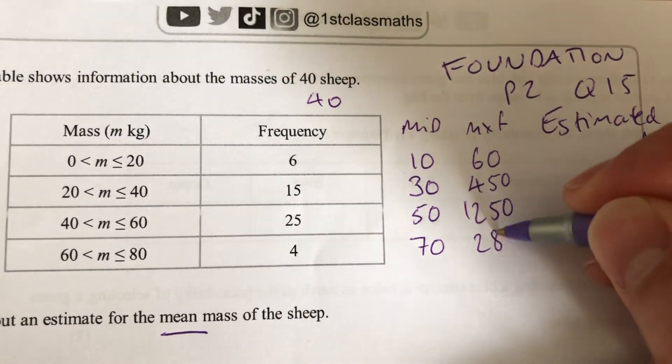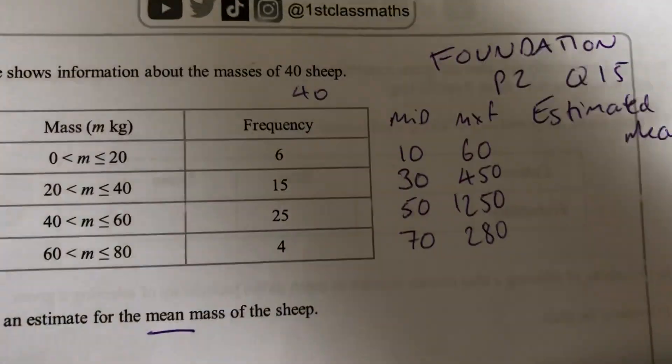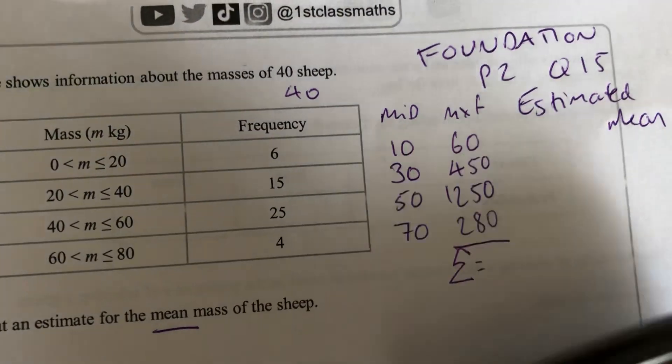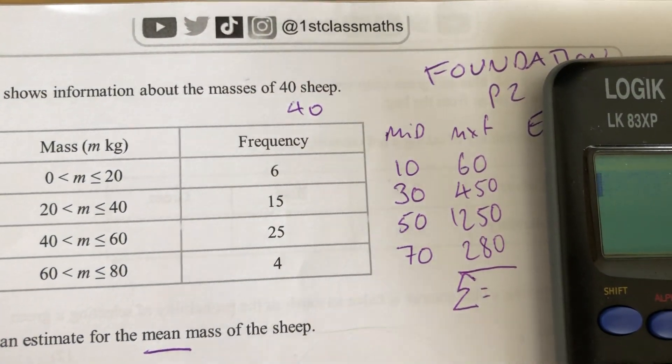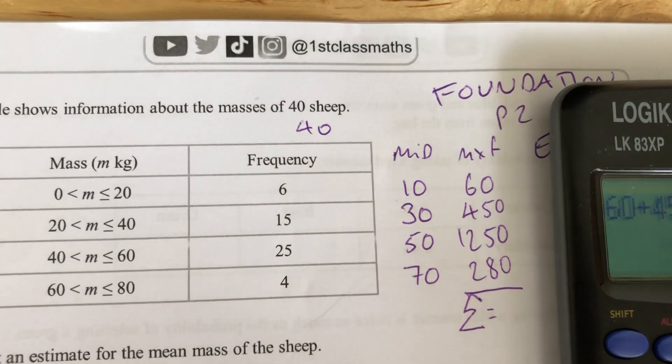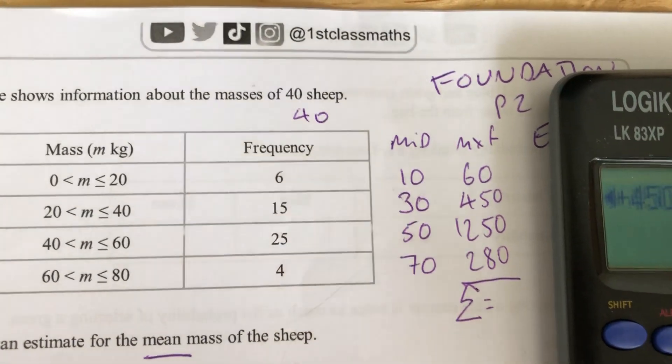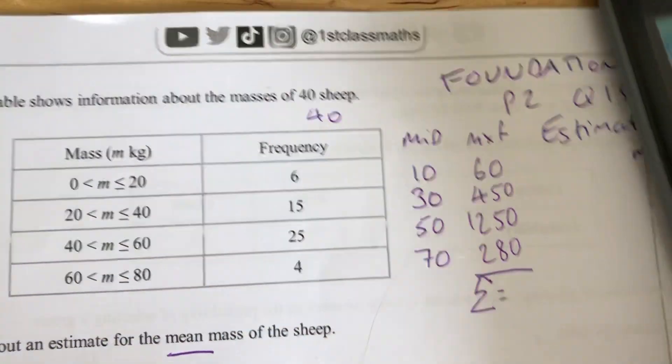If I'm in the habit of using the calculator, I'll do that. But then we're going to sum those, so we're going to put those all into the calculator. 60 plus 450 plus 1,250 plus 280. We'll get 2,040.